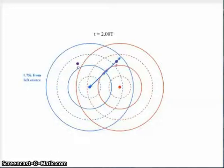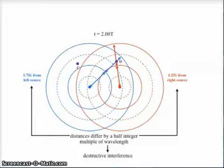Doing the same process for the point on the right, we see it's about 1.75 wavelengths from the left source and about 1.25 wavelengths from the right source. So those distances differ by a half integer multiple of the wavelength. And that's going to produce destructive interference.